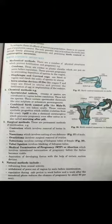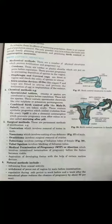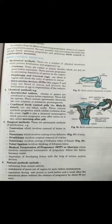Chemical methods prevent fertilization and pregnancy. These work by killing or immobilizing sperm. They are often in the form of birth control pills or tablets. Examples include tablets like Mala-D, Saheli, and similar female oral contraceptives.